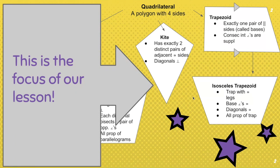In this lesson, we're going to learn about the last three: kites, trapezoids, and isosceles trapezoids. So let's get started.